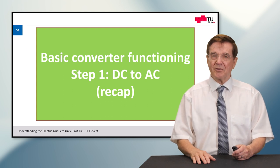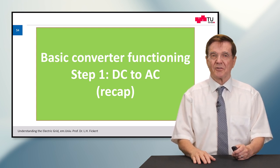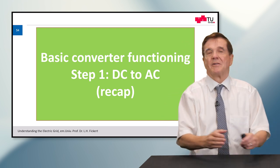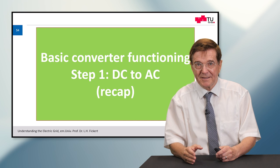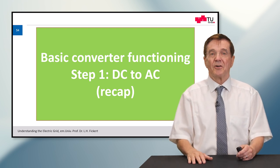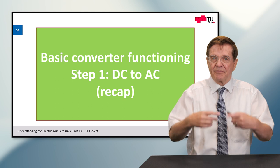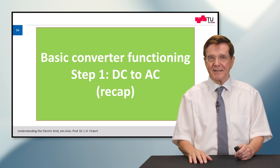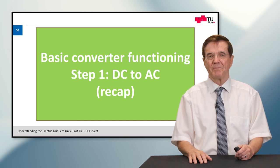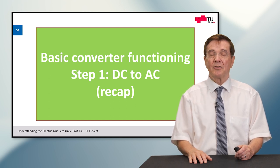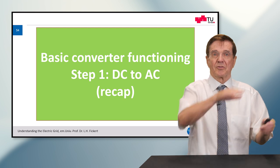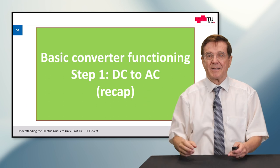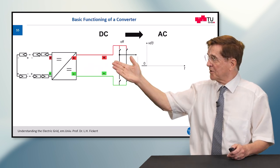So there are not only rotating generators converting primary energy into secondary energy, primary power into secondary power which is electricity. There are also converters. For the concrete function of the converters you can refer to my lecture about it, but here I will also do a short recap about the basic converter functioning. A converter has one goal: to convey constant electric voltage to AC voltage up and down, up and down.